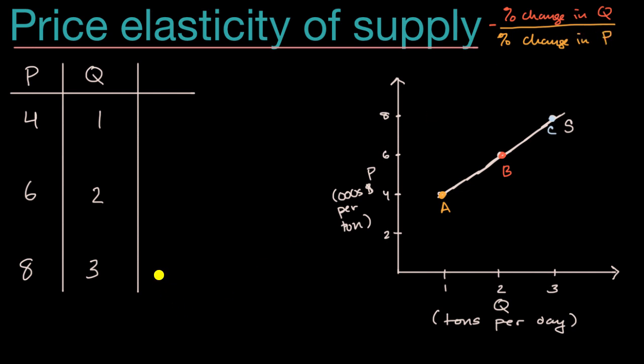Now to make this a little bit more tangible, let's look at a simple market. Let's say this is the market for apples right over here, where our vertical axis is price, and this could be thousands of dollars per ton. And then our horizontal axis is quantities, and maybe this is tons per day. And this supply schedule and this supply curve are essentially describing the same data.